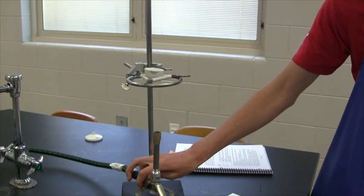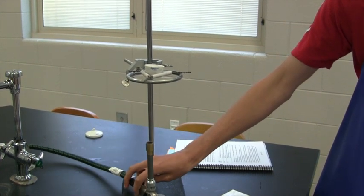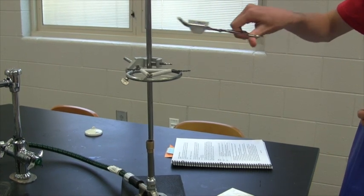Heat the crucible with the hottest part of the flame for three minutes. Using your crucible tongs, remove the crucible from the clay triangle and set it on the ceramic tile to cool.